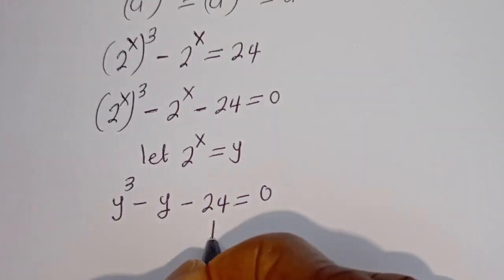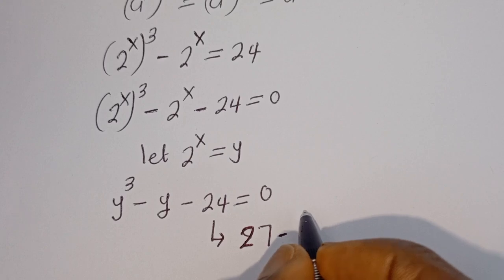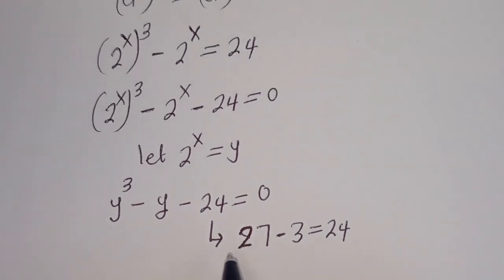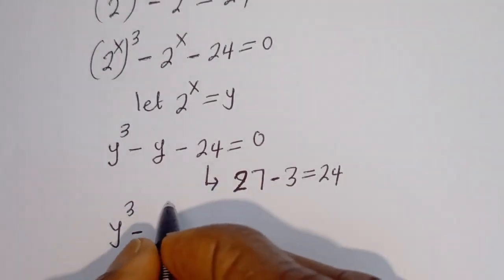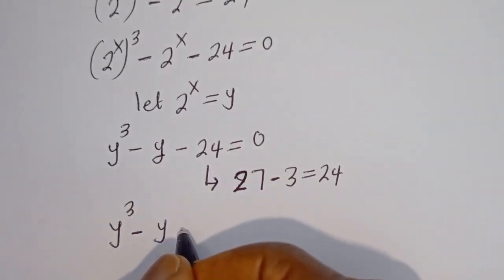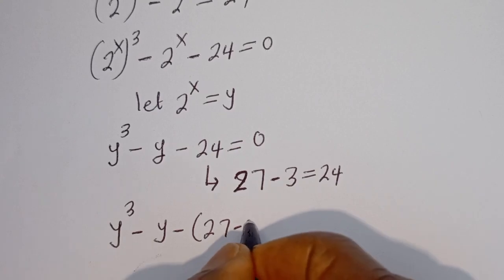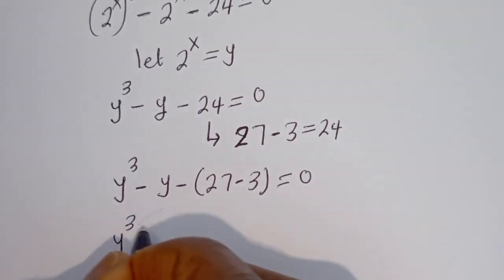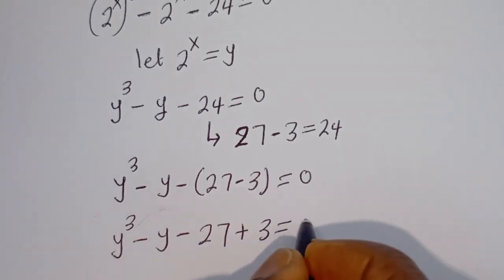Then here we have y to the power of 3 minus y minus 24 is equal to 0. Now 24 can be written as 27 minus 3, so this is equal to 24. So let's replace: we have y to the power of 3 minus y, then minus bracket, where 24 is 27 minus 3, is equal to 0. This gives y to the power of 3 minus y minus 27 plus 3 is equal to zero.